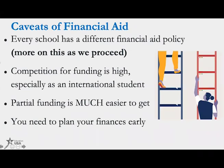Things you should know about financial aid: every school has a different policy. The competition for funding is really high, especially as an international student, so it's difficult to get a full scholarship — it's much easier to get partial funding, like 50–70% of tuition, but not a full ride. You really need to plan your finances early, so start talking to your parents about the process of applying for financial aid.